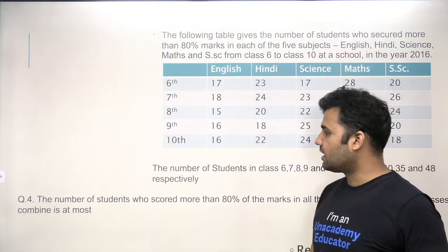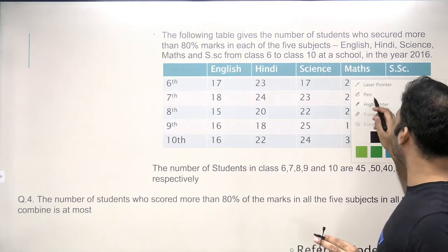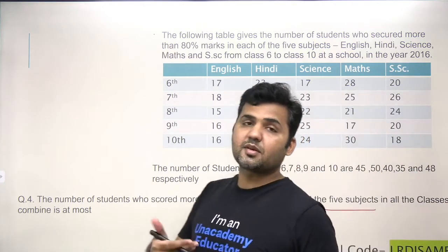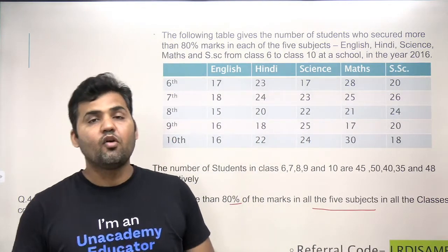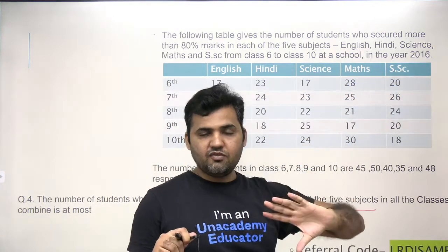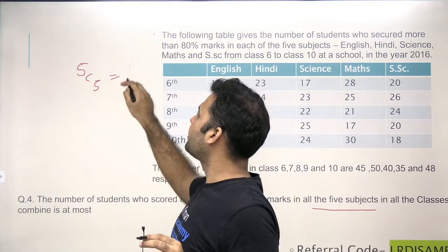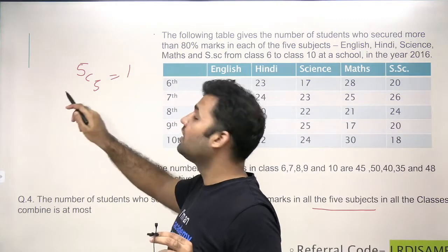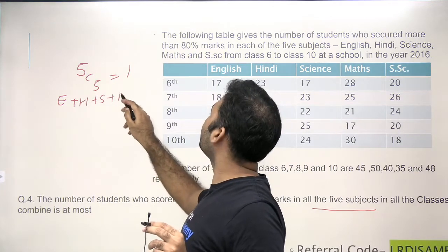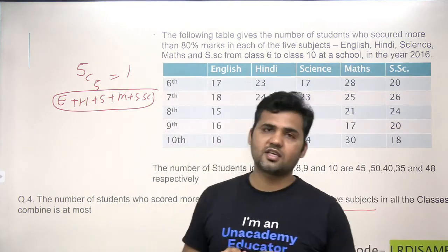In this fourth class problem, we will find out students getting more than 80% of the marks in all five subjects. When I say all five subjects, we need more than 80% in all subjects. What are the possible combinations out of these five subjects that you can make? If we have five subjects, there will be only one combination — 5C5 — that is one combination: English plus Hindi plus Science plus Math plus Social Science. So in all five subjects, there is only one combination.